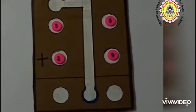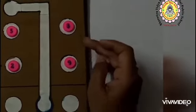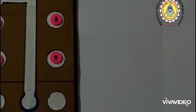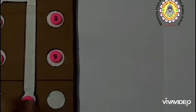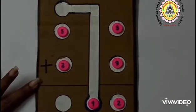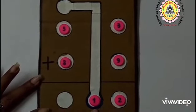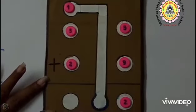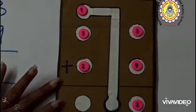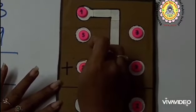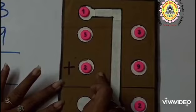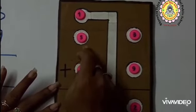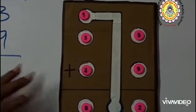Let us count 1's place: 3 plus 9 is equal to 12. In 1's place it is 2 and in 10's place there is 1. We have to carry over this number to 10's place. Let us count 10's place numbers children: 5 plus 1 is equal to 6, and 6 plus 2 is equal to 8. 53 plus 29 is equal to 82.